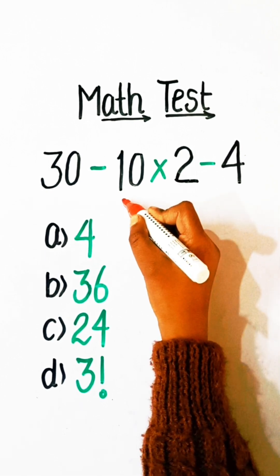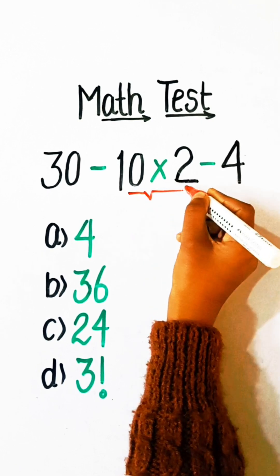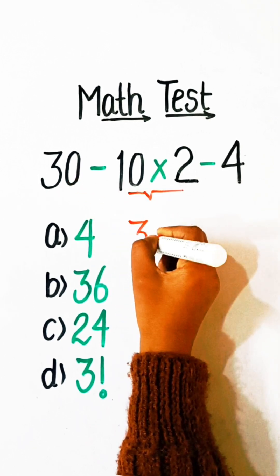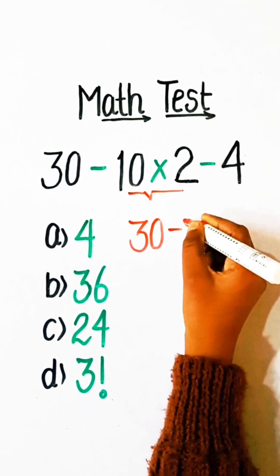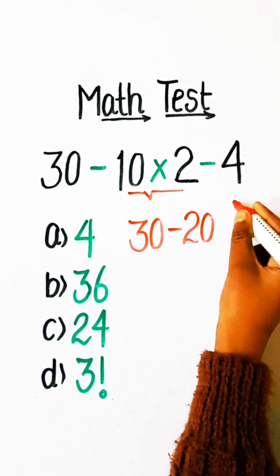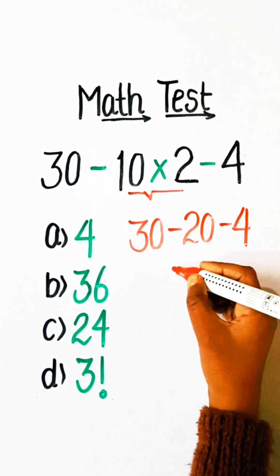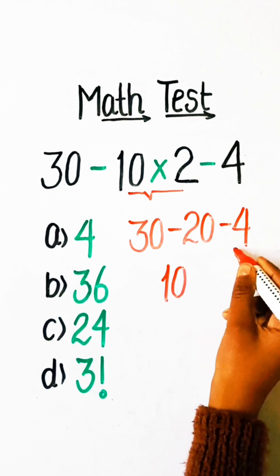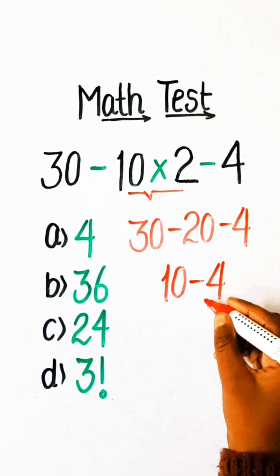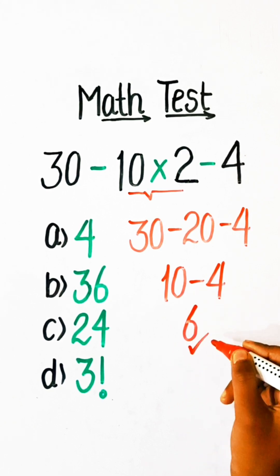According to BODMAS, we have to solve the multiplication part first. So we write 30 minus 10 multiplied by 2, which is 20, minus 4. Then 30 minus 20 is 10, minus 4. So 10 minus 4 is 6.